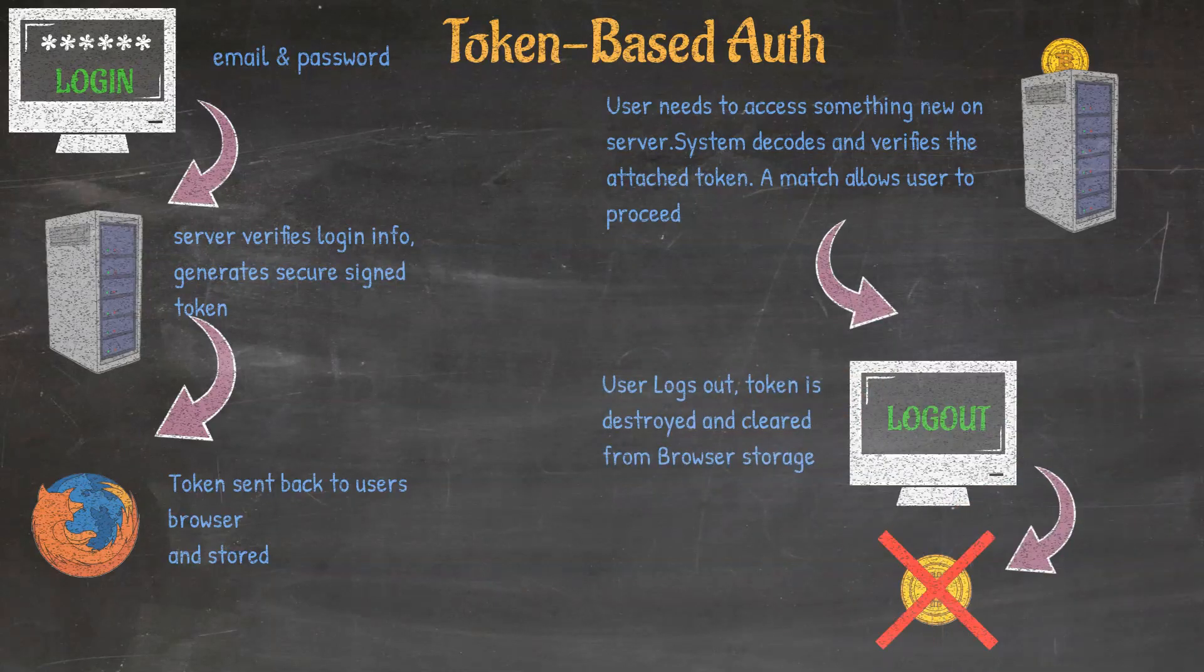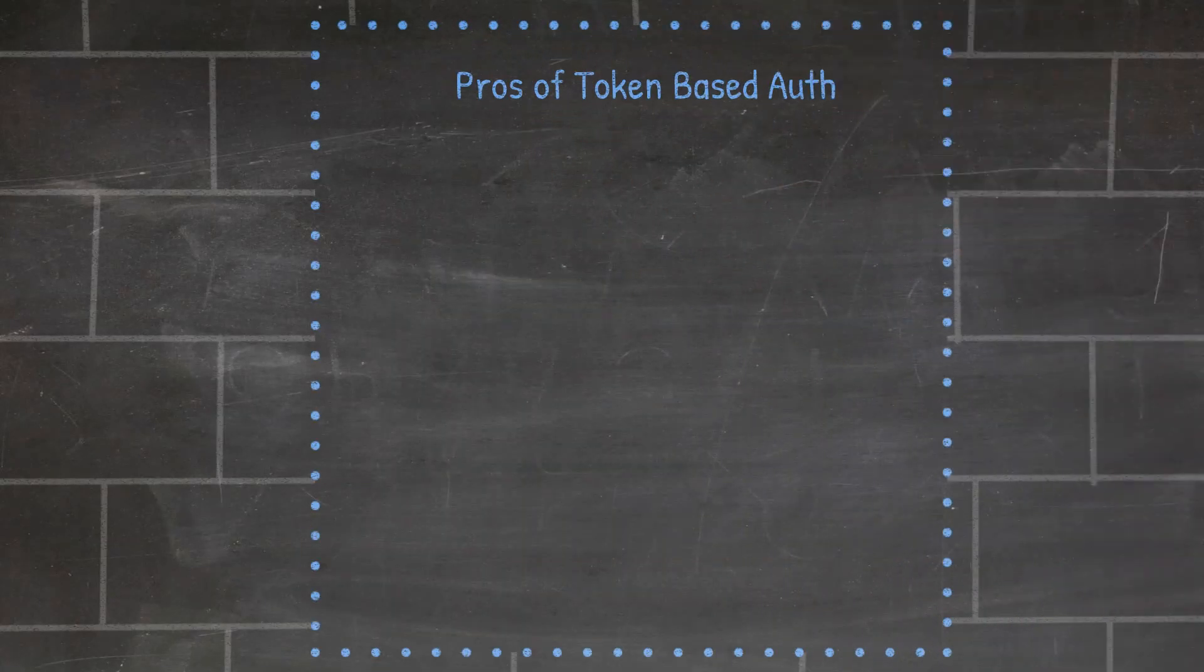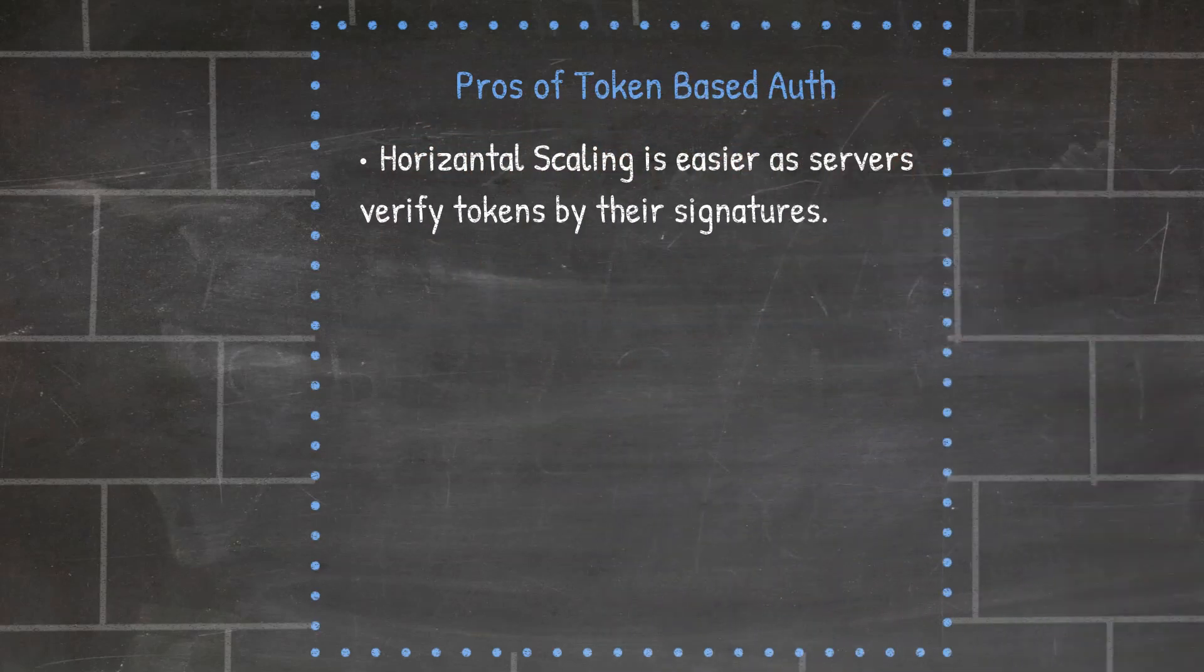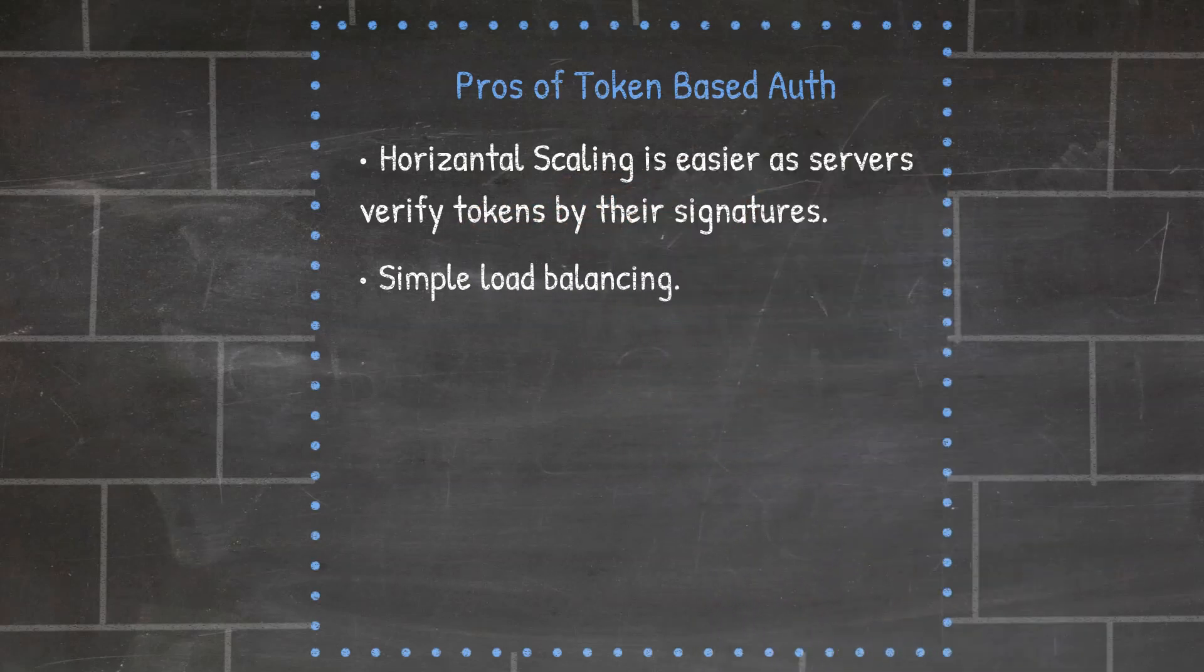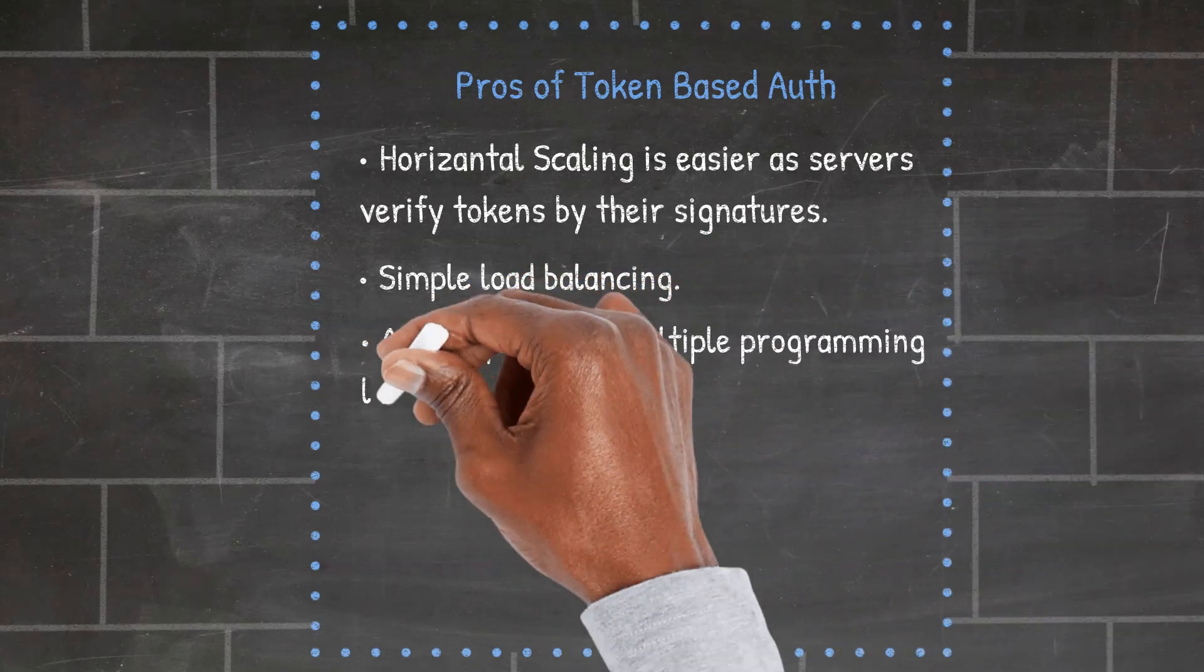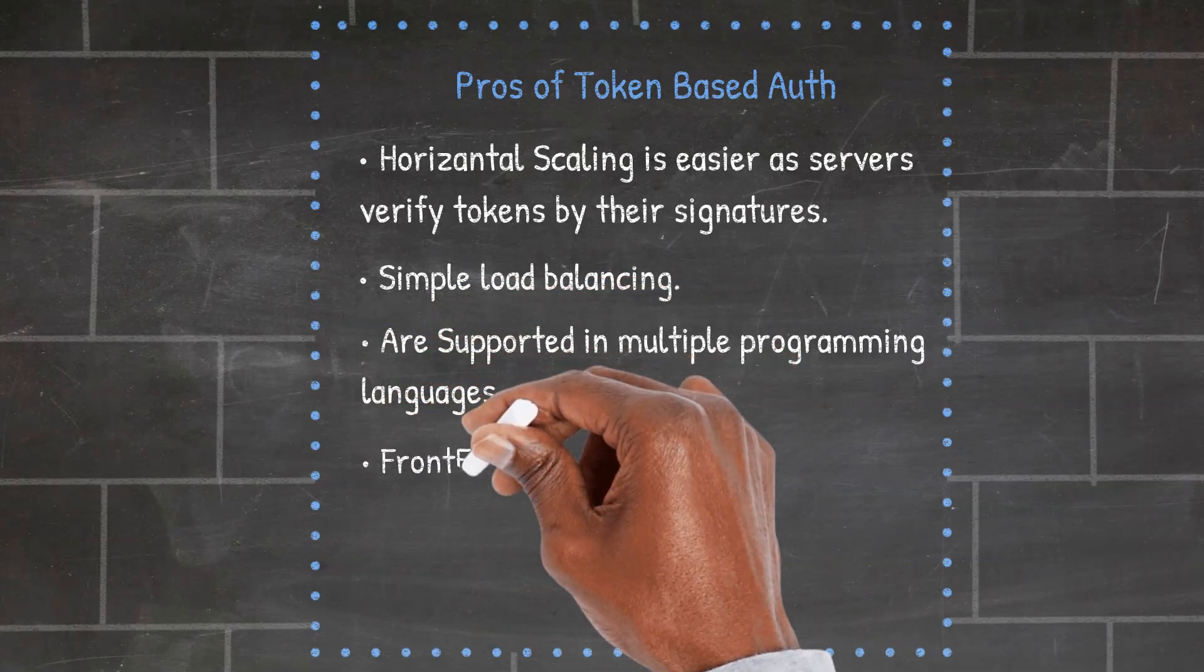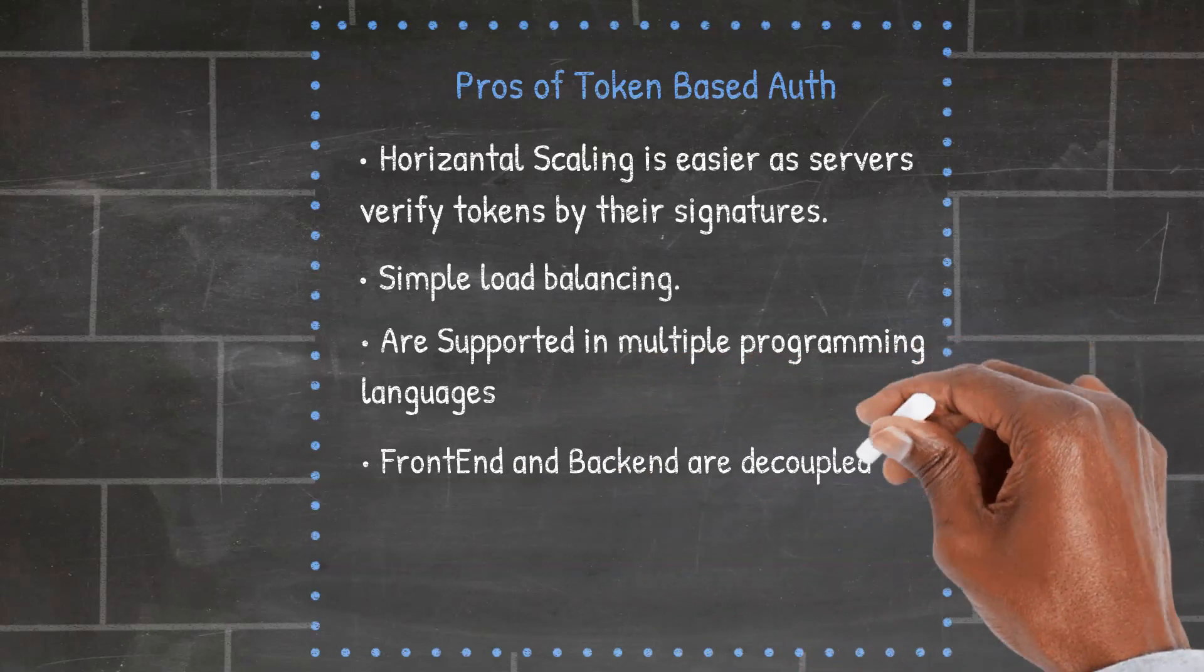The pros of using JWTs: Horizontal scaling is easier as servers can verify the token by its signature. But this only applies if it's a stateless JWT. Simple load balancing. When working with tokens, you don't need any shared or distributed cache. All you need is CPU power. JWTs are supported in multiple programming languages as it is an open standard. Front-end and back-end architecture is decoupled, which makes it easier to integrate with a microservice architecture and with mobile applications. JWTs also remain operational even if cookies are disabled in the browser.